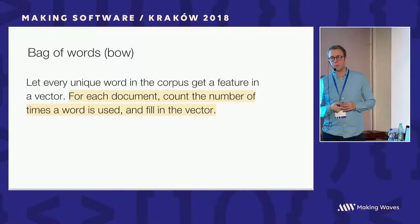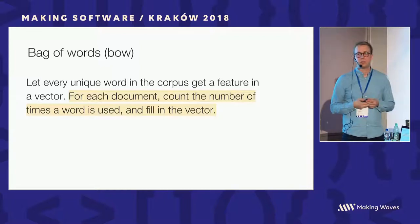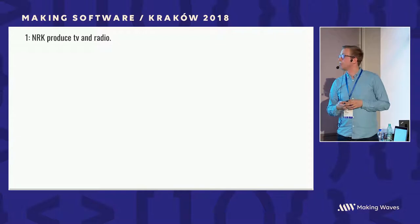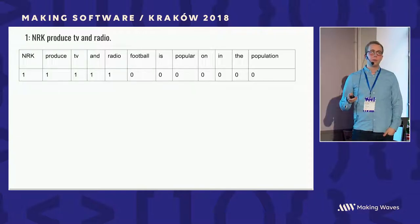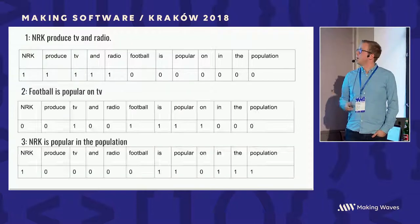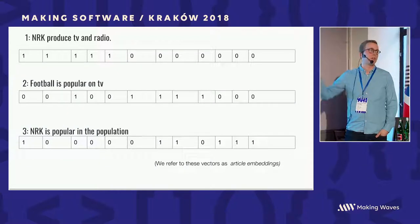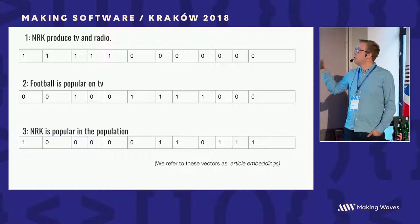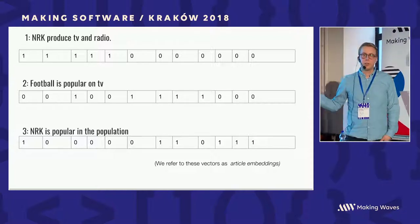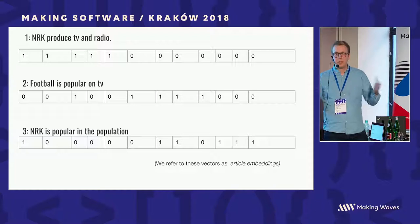Then you can take all those words, string them together, and build a feature vector where every unique word in the corpus has one index in the array. For each document, you count the number of times a word is used and fill it into the vector. For the first article, 'NRK produced TV and radio,' you count how many times each word appears and fill it in. Do the same for other articles, and now you have mathematical representations of article content — we refer to these vectors as article embeddings, because they try to embed the meaning of the articles in a vector representation.